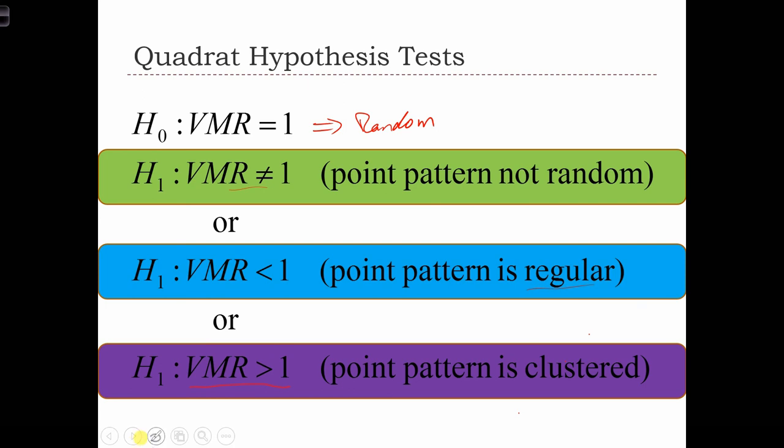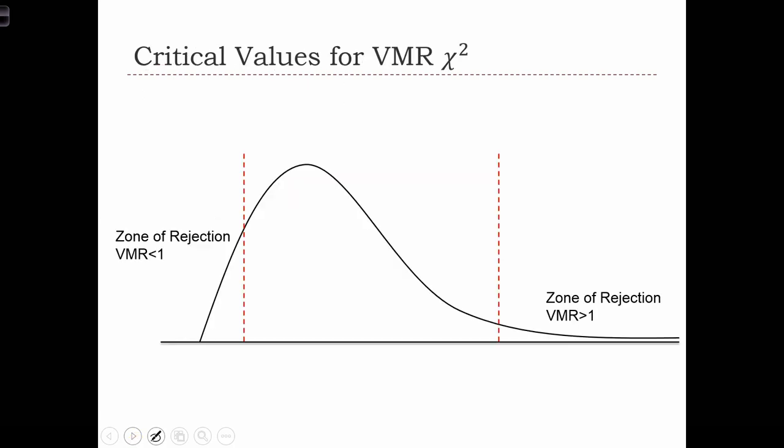So before, when we did goodness-of-fit tests, we always assumed that we were dealing with a right-tailed test. But now with this VMR, or with the point pattern analysis and quadrat analysis, we can actually do left-tailed, right-tailed, or two-tailed tests. So if this is the chi-squared over here, we've got the expected value of chi-squared over here to be M minus 1.